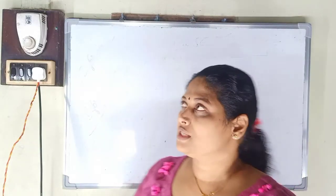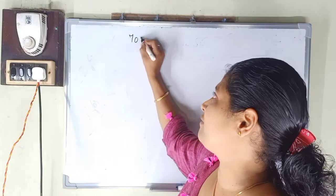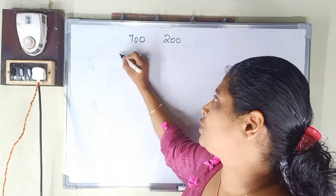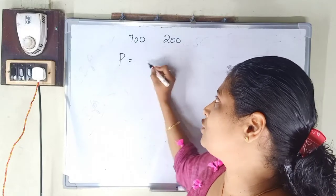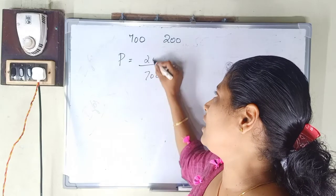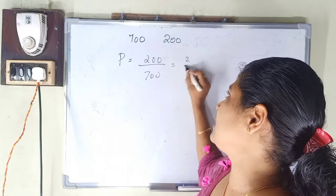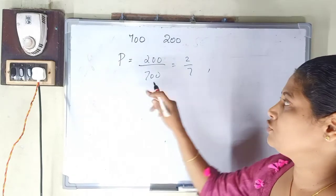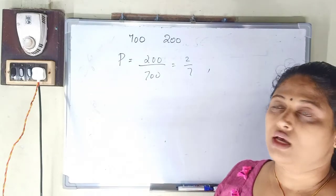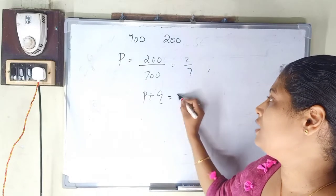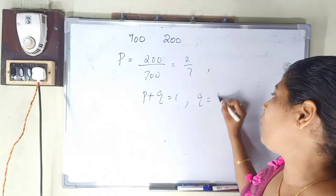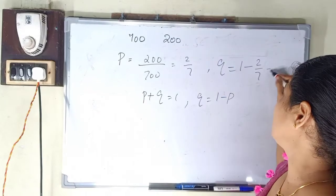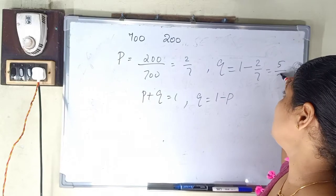From the question, we have 700 units, out of which 200 are defective. So the sample proportion P is equal to 200 out of 700, which is 2 by 7. Then Q is equal to 1 minus P, so Q equals 1 minus 2/7, which is 5 by 7.